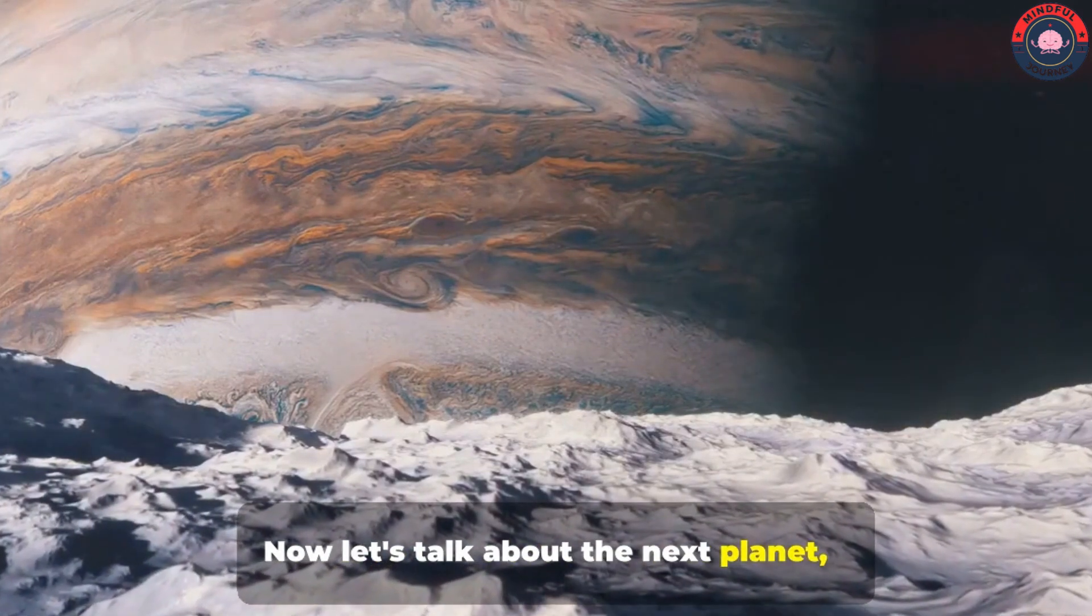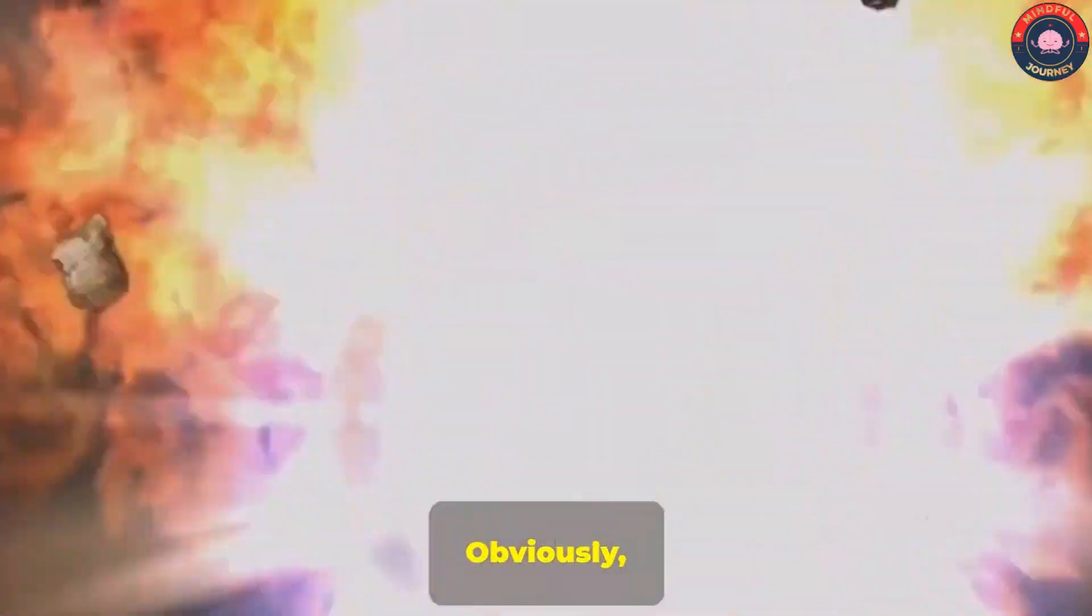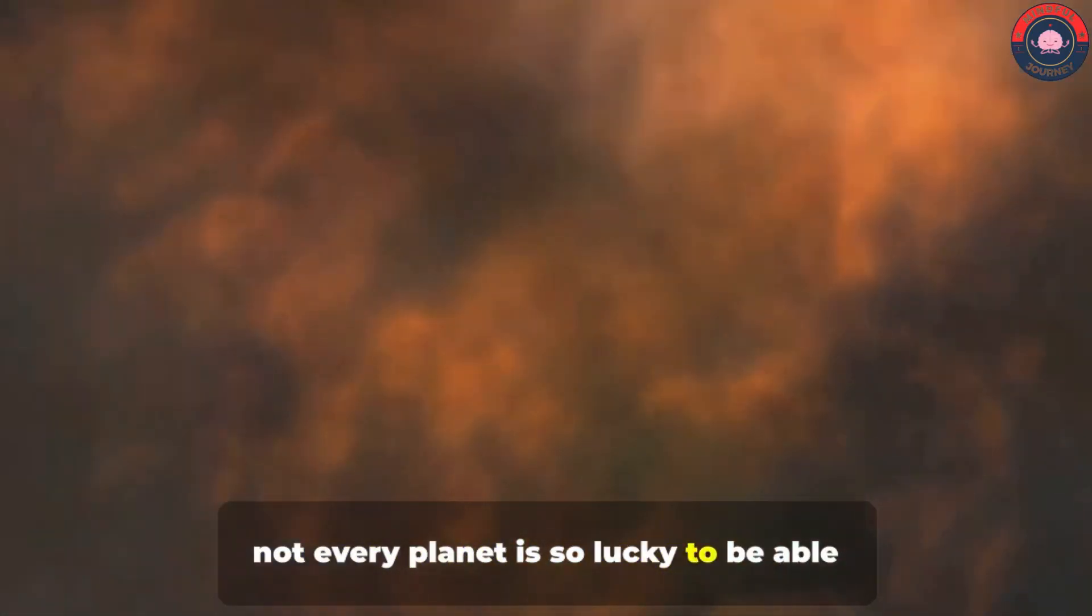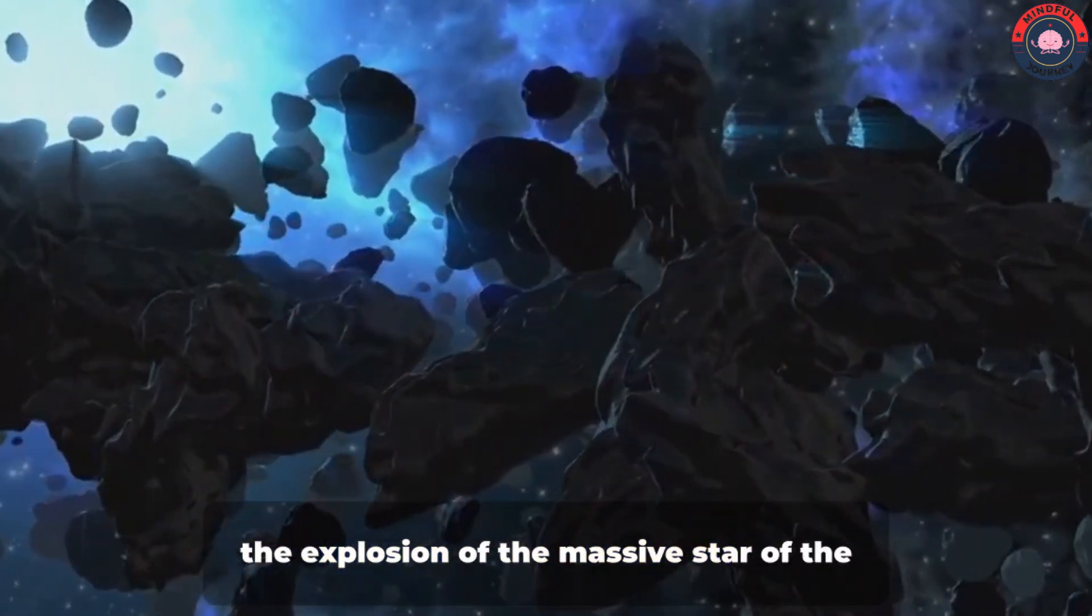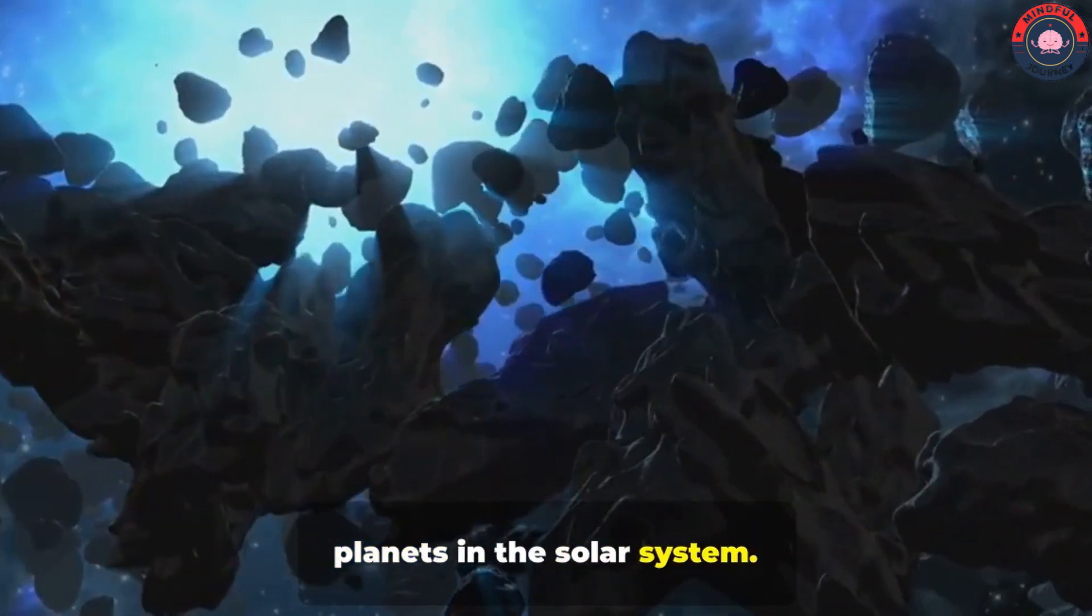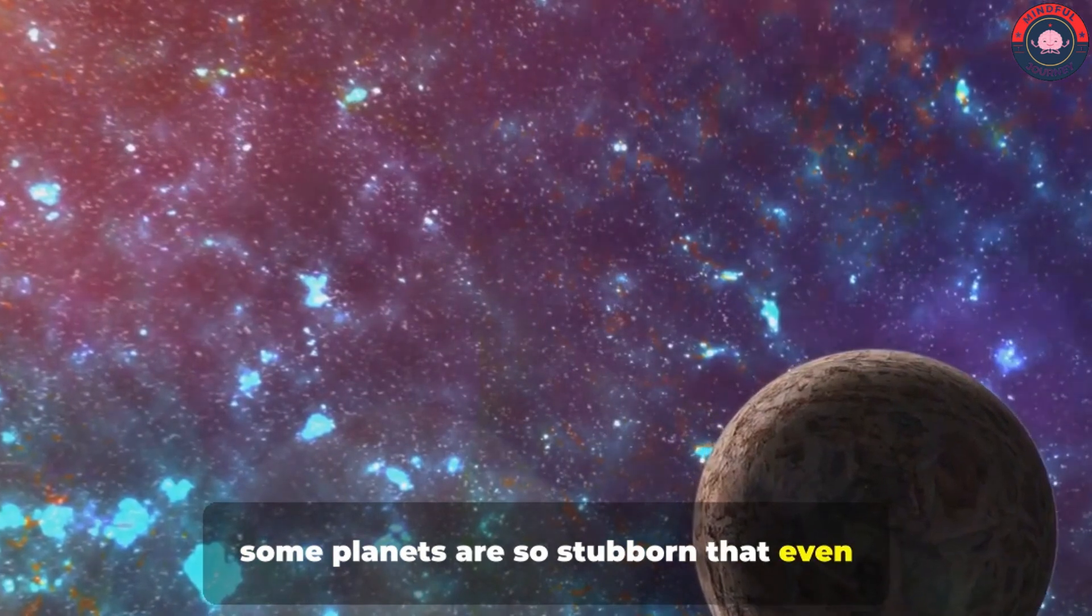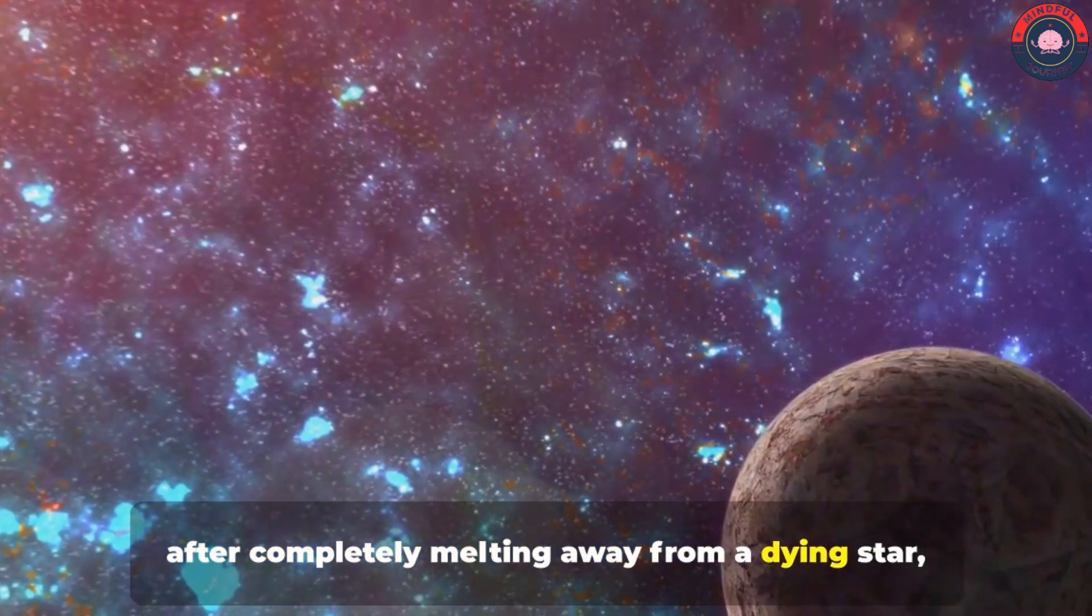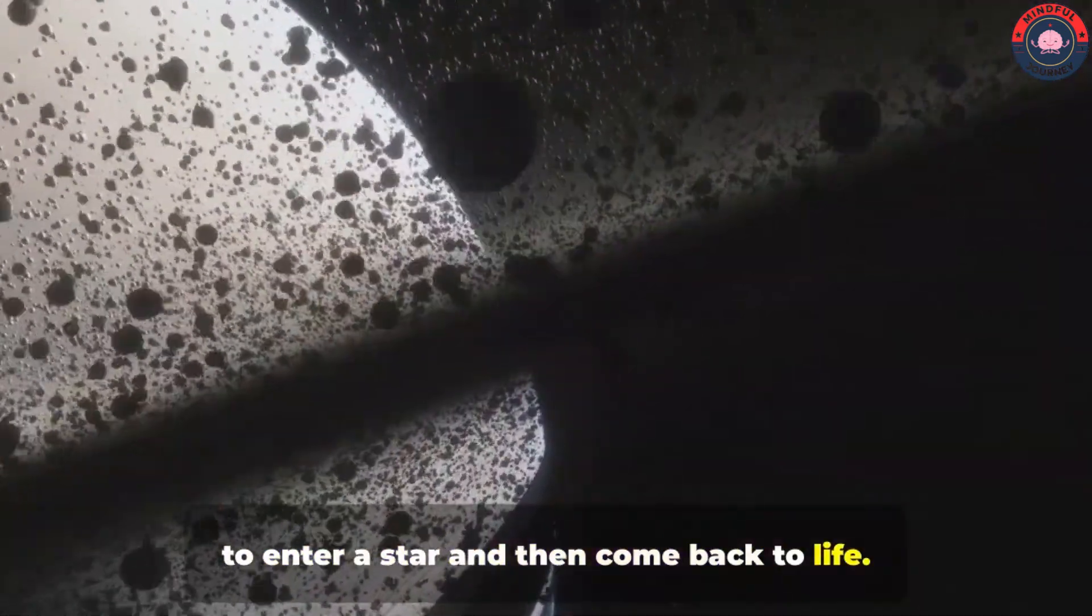Now let's talk about the next planet, which seems to not follow our laws of physics. Obviously, not every planet is so lucky to be able to save itself from supernova. In many cases, the explosion of the massive star of the solar system means the end of all the planets in the solar system. But quite surprisingly, some planets are so stubborn that even after completely melting away from a dying star, they survive.